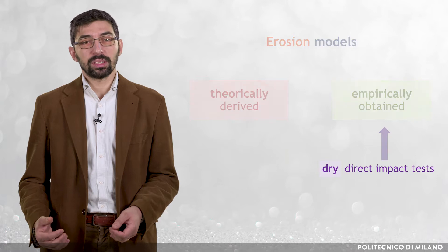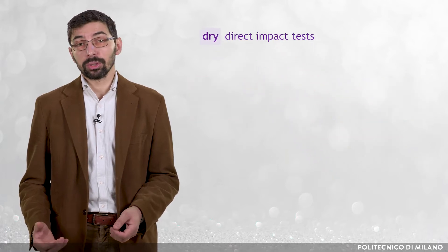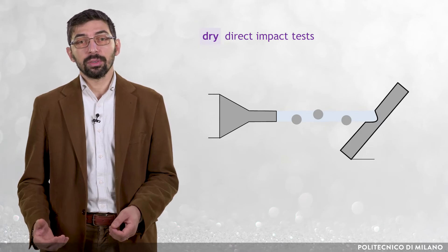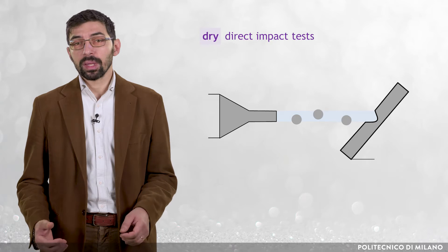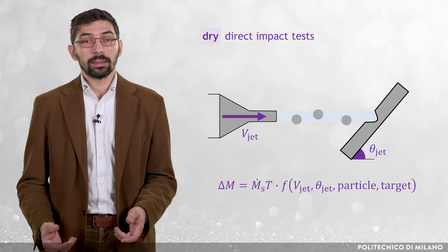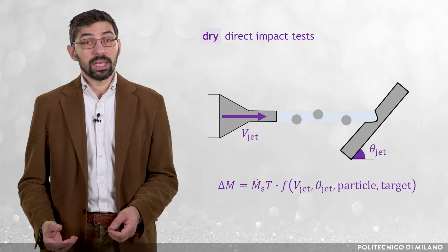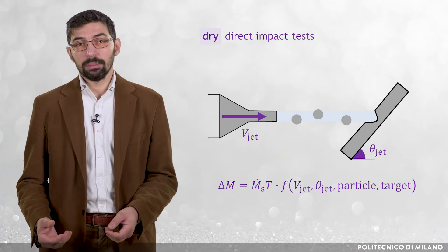If we neglect any possible interaction among the particles and consider steady-state erosion, in a dry direct impact test we can establish the following functional relationship: mass of removed material, delta m, equal to the solid mass flow rate, dot ms, times the testing time, t, times the function of...